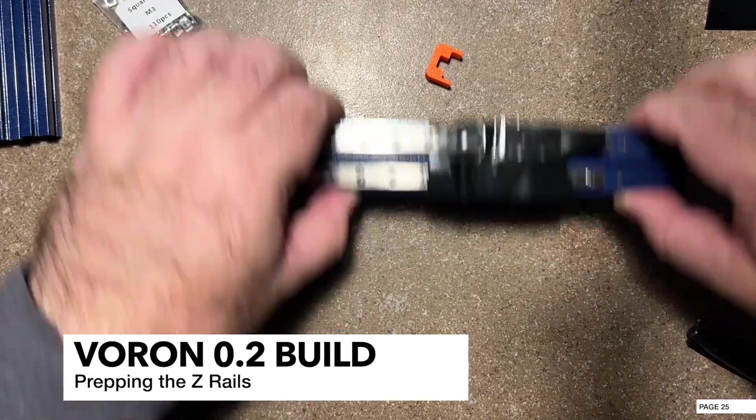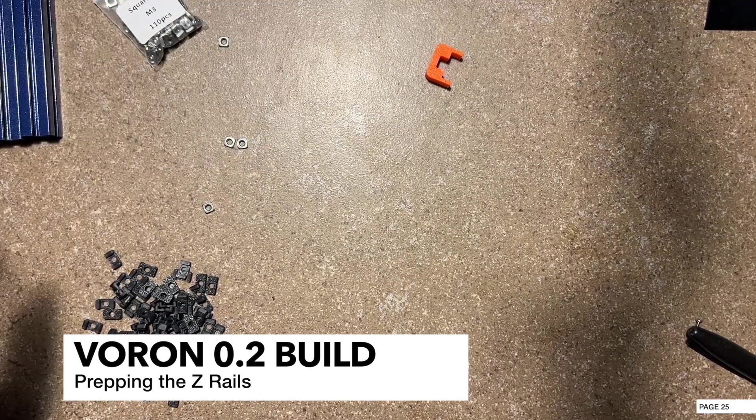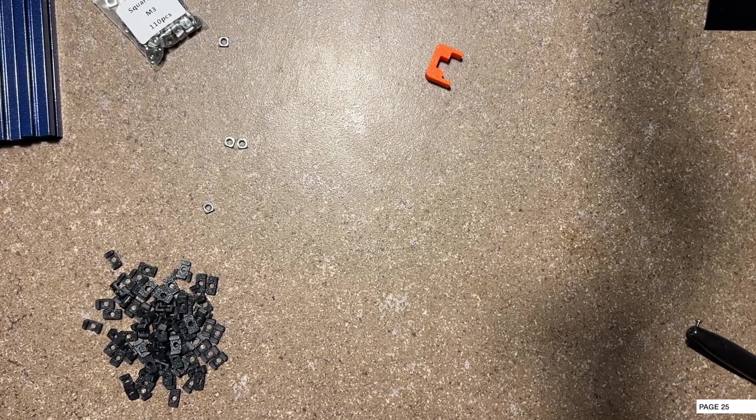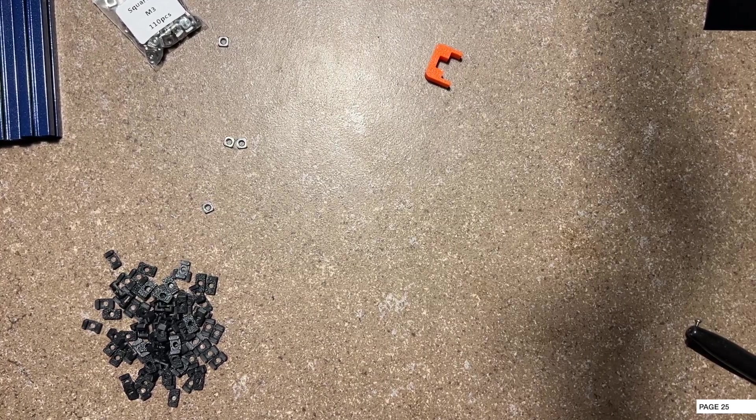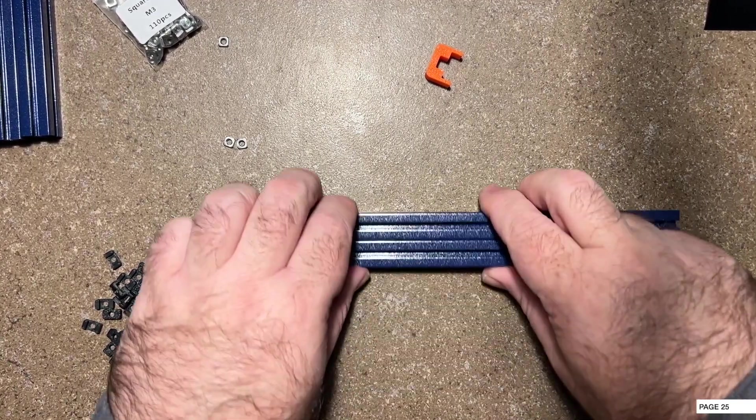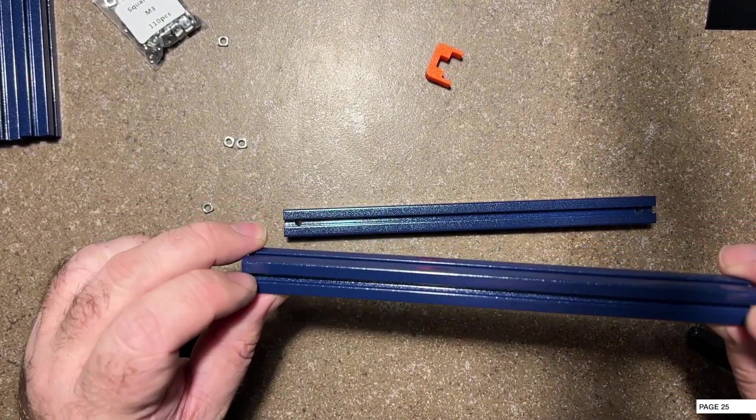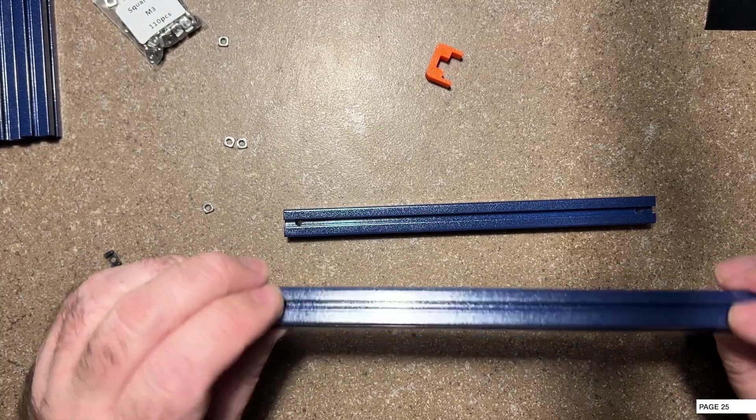The Y rails are done now. We're going to set these aside. Now we're going to grab the next extrusion for the Z rails. The Z rails are going to use the C extrusions. So grab those out of your pile marked C. Then you're going to know, double check, that they have the two holes and that they do not have three holes. If you see another hole on this side, you've grabbed the wrong one.